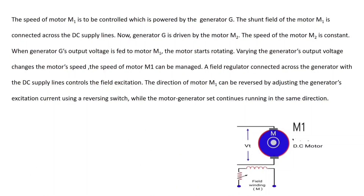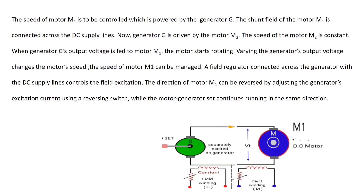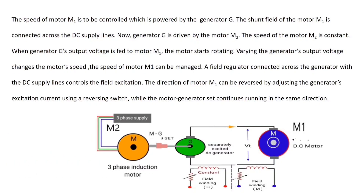The supply of the generator is given to the DC motor set, and motor M2 — either a three-phase induction motor or a DC motor — is coupled to the generator. The DC motor M1's rotation can be reversed, or run in the forward direction, without changing the rotation of the generator and the motor M2.